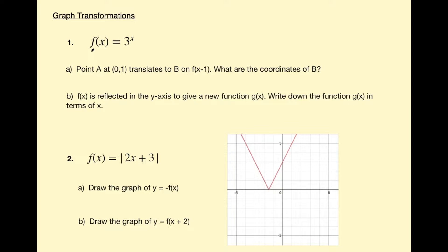This first example gives us a function f of x equal to 3 to the power x, and part A says point A at (0, 1) translates to B on f of x take 1. What are the coordinates of B? One approach is to plot out 3 to the power x, draw the graph, and then plot out f of x take 1 to see where the point ends up. But once you know about graph transformations you don't have to do all of that — it gives us a set of rules or shortcuts we can quickly apply.